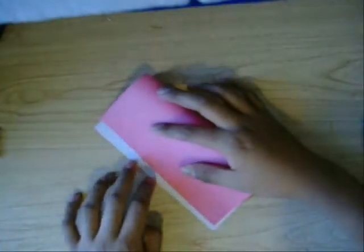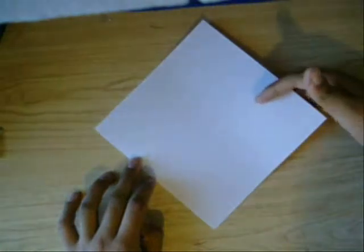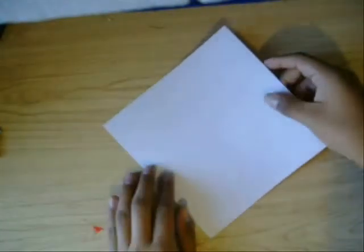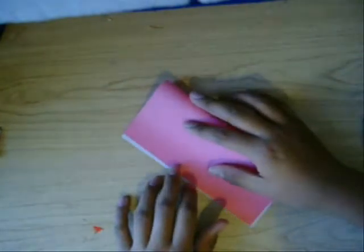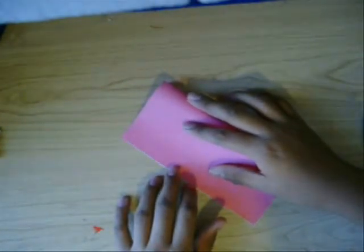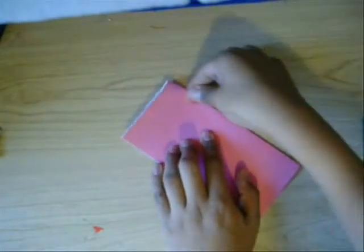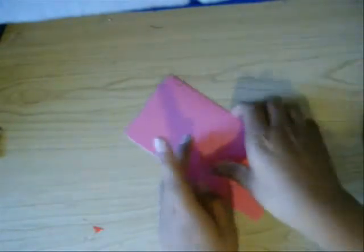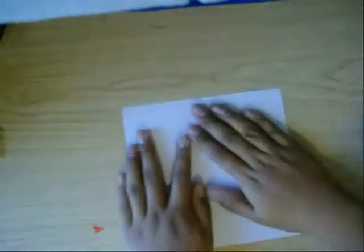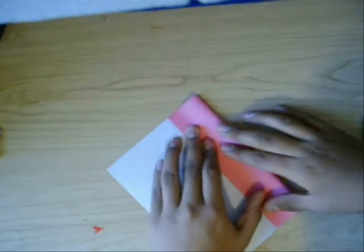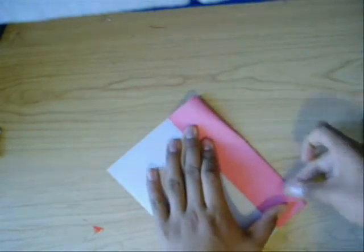First, start off like this with the dark side or the non-colored side up. Just fold it in half, fold it in half, fold it again in half. Then unfold it and fold the sides to the center.